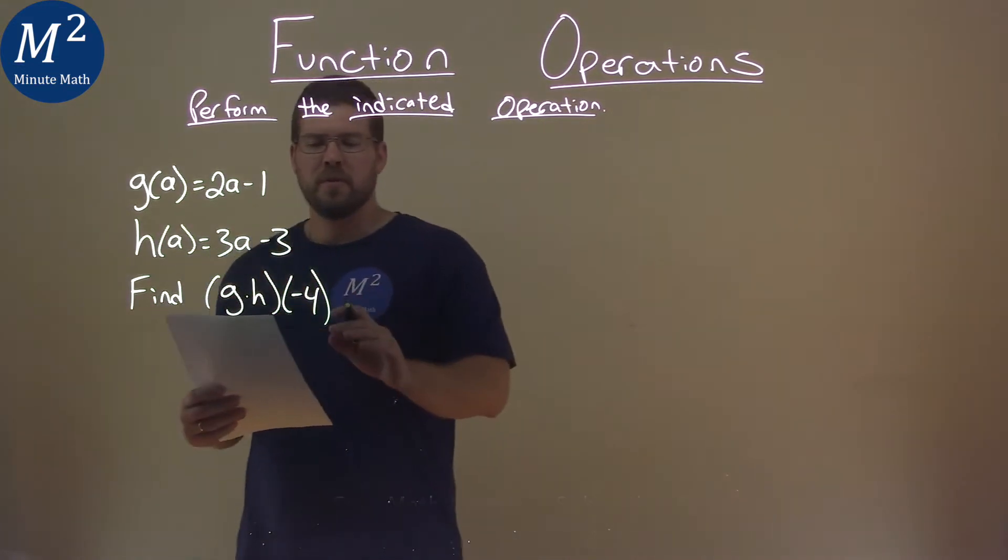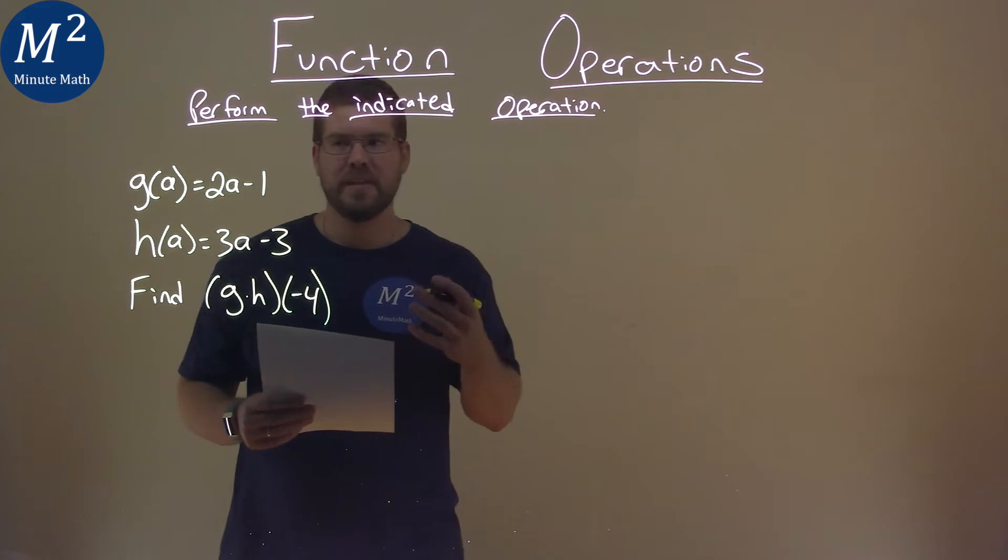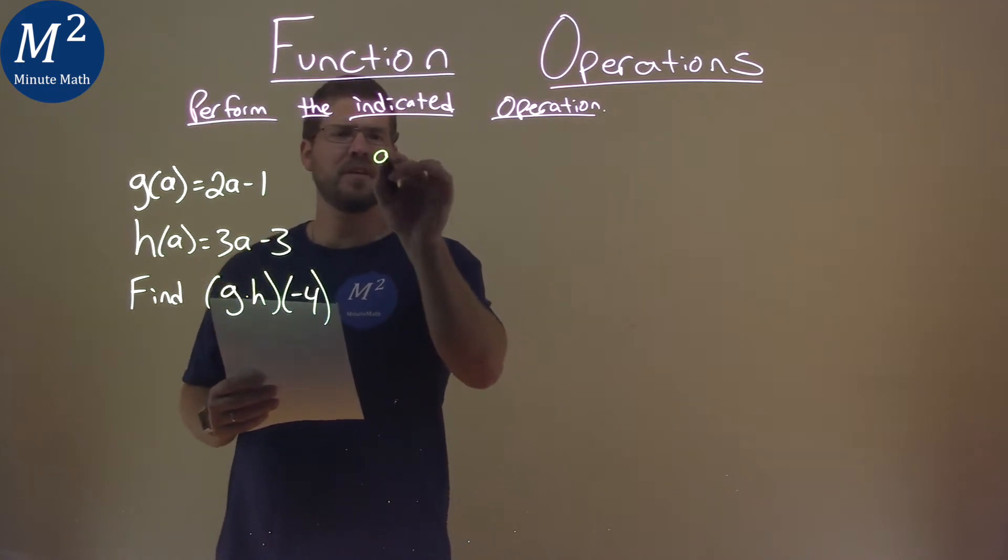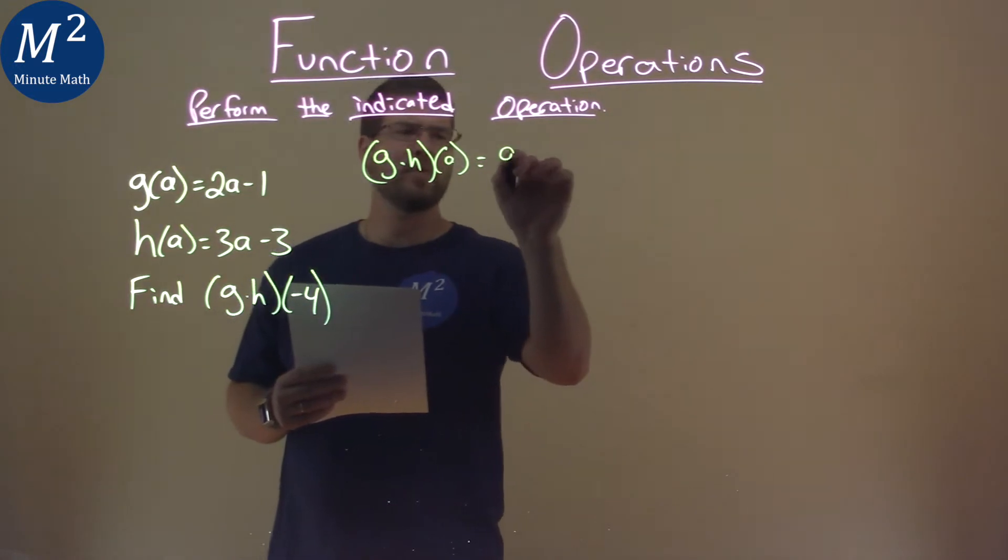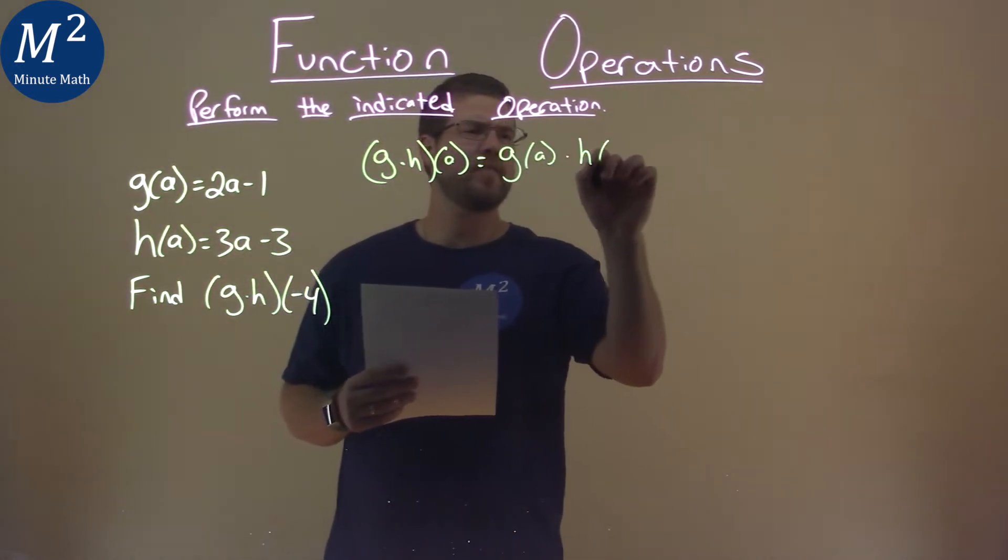Well, first thing I want to do is find what's g times h of a. So g times h of a here is g of a times h of a.